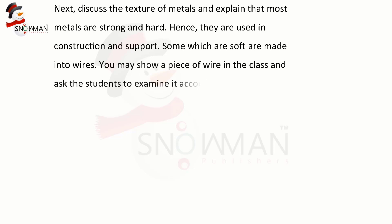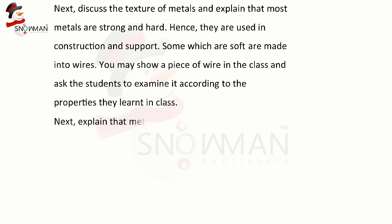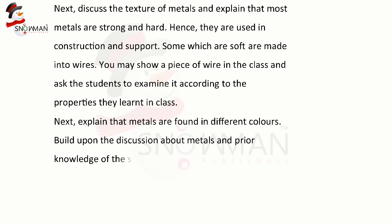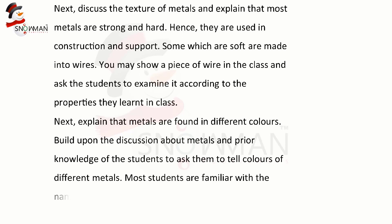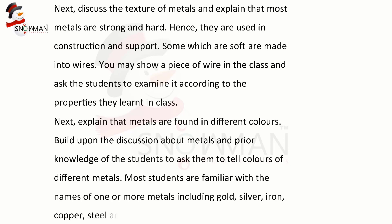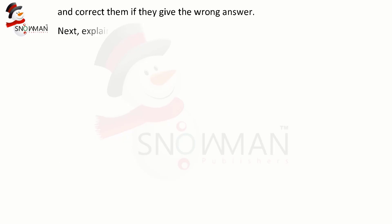Next, explain that metals are found in different colors. Build upon the discussion using students' prior knowledge — ask them to name the colors of different metals. Most students are familiar with the names of one or more metals, including gold, silver, iron, copper, steel, and aluminium. Help them to answer and correct them if they give the wrong answer.